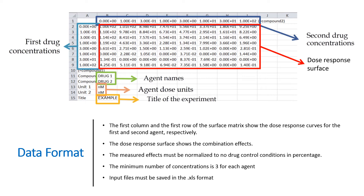However, notice that the minimum number of concentrations is 3 for each agent, and we would advise to use at least 4 concentrations. Please note that input files must be saved in the .xls format and not the .xlsx, or any other formats such as .csv or .txt.